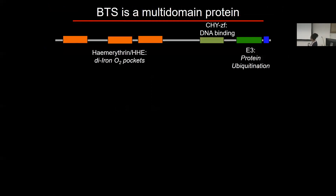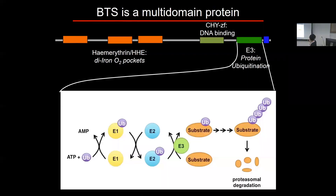How does Brutus do this? I initially pulled it out because it had a CHY zinc finger potential DNA-binding domain, but my colleague José pointed out two other interesting domains. One is the E3 ligase domain — E3 ligases facilitate ubiquitination of target proteins. Paired with E1 and E2, the E3 transfers ubiquitin molecules from E2 to the substrate, and once tagged with multiple ubiquitin chains, the protein is targeted for degradation by the 26S proteasome.